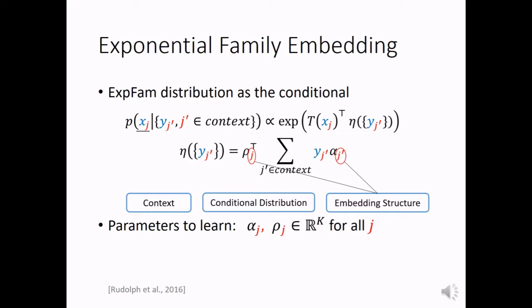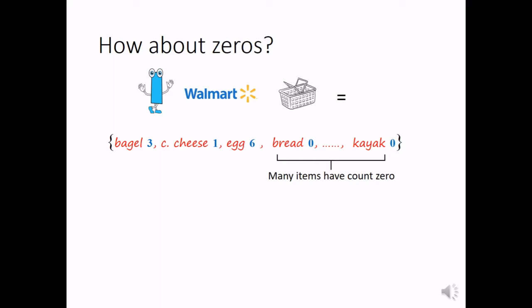The standard exponential family embedding does not consider data sparsity problem. Actually, in our data, we have many zeros. For example, if I go to Walmart and I get a shopping basket with bagel, cheese, and egg, but I don't have bread in my basket, I don't have a kayak in my basket. The question is, do we want to predict zeros?